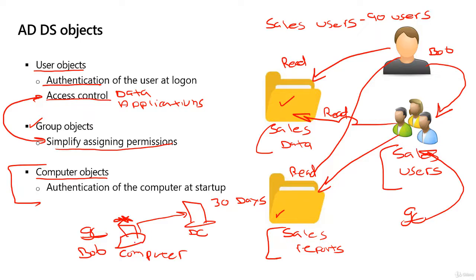So those are our three objects. Just like in any environment, most of the effort will be with users and groups. Computers are joined to the domain and that's really all you do with them. We'll create some policies to manage settings and things like that, but most of the objects you manage on a day-to-day basis will be users and groups.